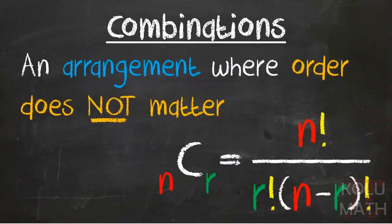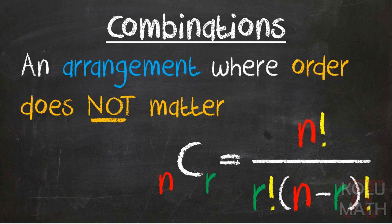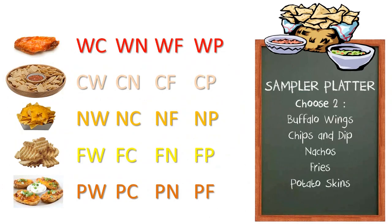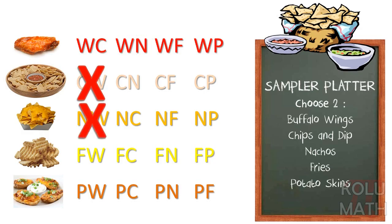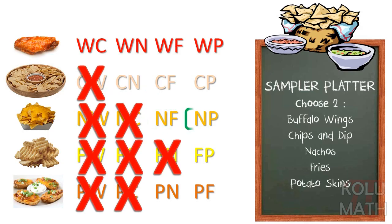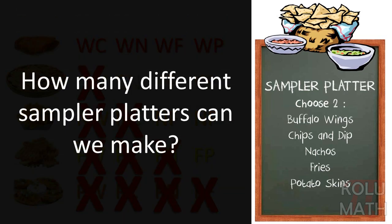Because with combinations, those arrangements, the order does not matter. It doesn't matter which I order first, or which goes first on the plate. I'm gonna have the same meal. So we can actually go through there and remove the duplicates. If we look at the first item, wings and chips and dip, let's see if that item comes up again. And sure enough, it does right below. Chips with wings. We can do the same thing for wings and nachos. Find all the matching pairs, and there's only one. Nachos and wings. Wings and fries? Fries and wings. Wings and potatoes? Potatoes and wings. You see, that made kind of an interesting pattern there. And if you notice, that pattern continues as we go through the different options. So we're literally knocking out a pair. And when we get all finished there, you can see we're left with 10 different menu choices. So when they ask us how many different sample platters can we make, we know that that's 10, or 5c2.